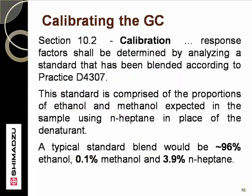The commonly used ASTM D5501 method has specific instructions that mass relative response factors, MRRFs, should be determined by analyzing a prescribed sample made of ethanol approximately 96%, methanol 0.1%, and heptane 3.9%, all in mass percentages. In this case, heptane is a substitute for the denaturant in the sample. The MRRF values are calculated from the ratio of the ethanol and methanol response factors to that for heptane.